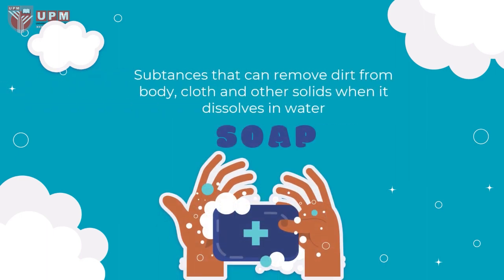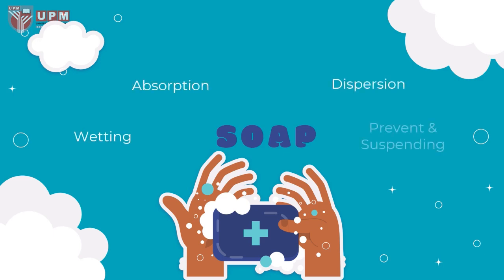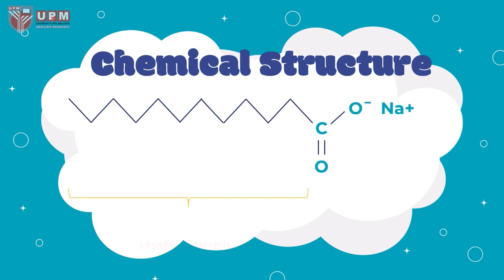Soap is a substance that can remove dirt from body, cloth, and other solids when it dissolves in water. There are four physical chemical steps of cleaning, which are: wetting surface, absorption, dispersion, and prevention and suspending. Soap chemical structures — their molecules must contain a hydrophobic group and a hydrophilic group.